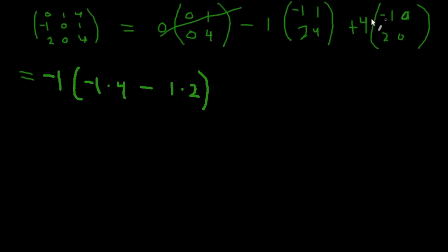And then for here, for this component, we're going to add 4 times the determinant of this matrix, which is -1 times 0 minus 0 times 2, which is going to be 0. So this is going to conveniently go to 0, and we're going to be left with the result of this component.